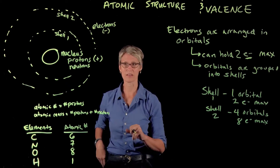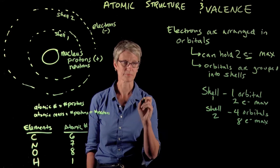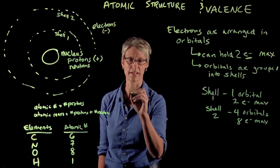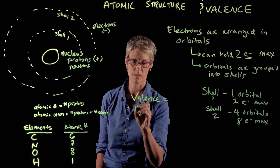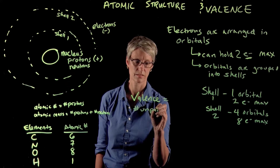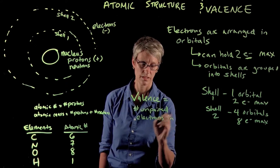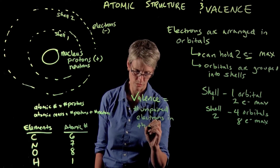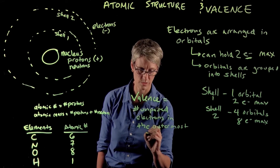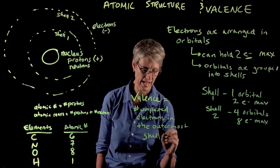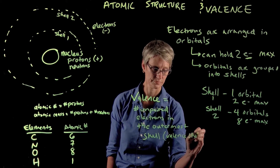So let's think about how electrons fill in the orbitals and I'll introduce the concept of valence. Valence is equal to the number of unpaired electrons in the outermost shell of an atom. The outermost shell is sometimes called the valence shell.